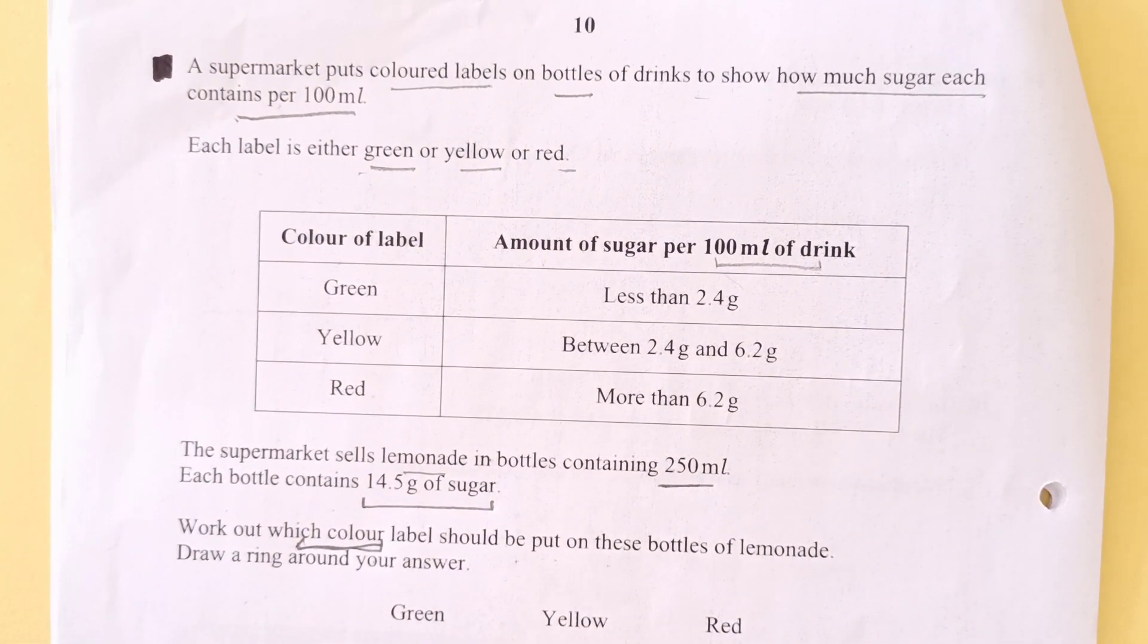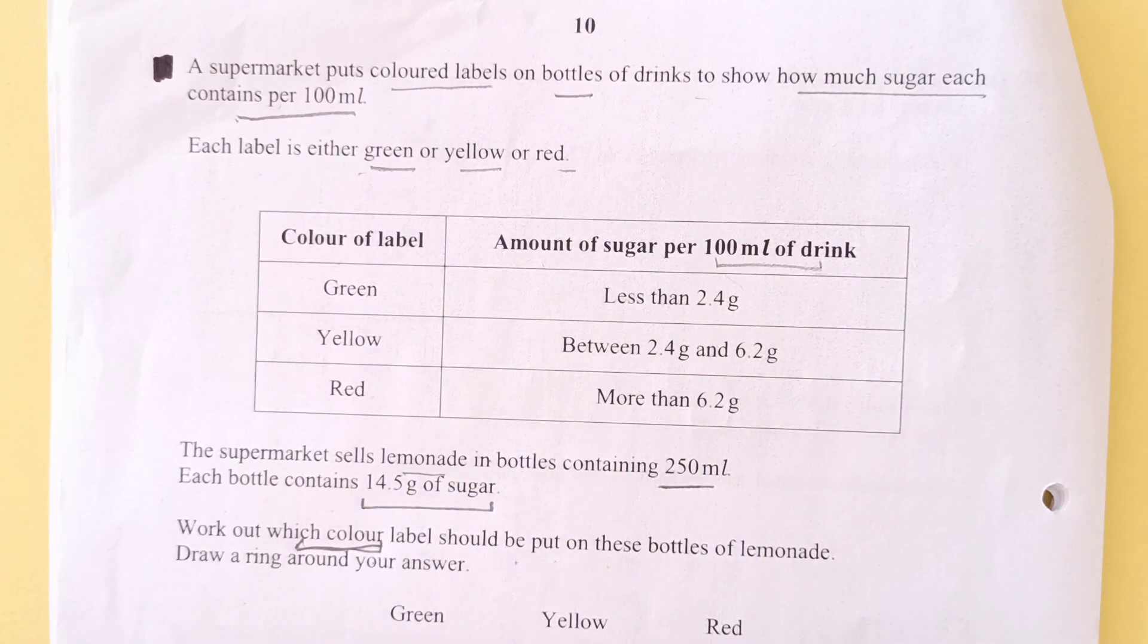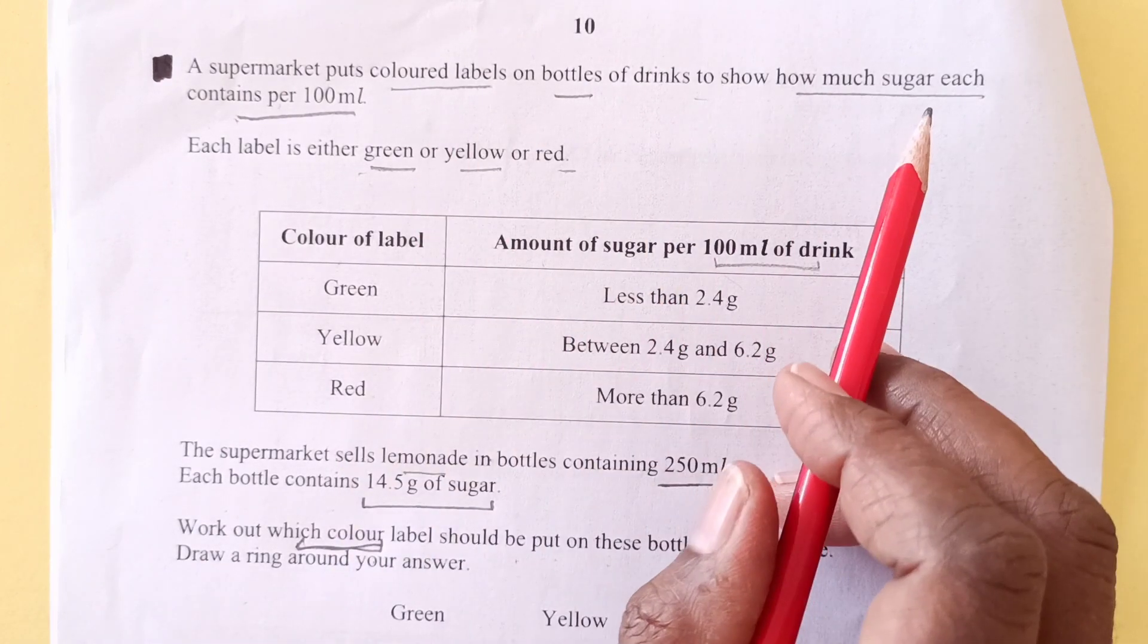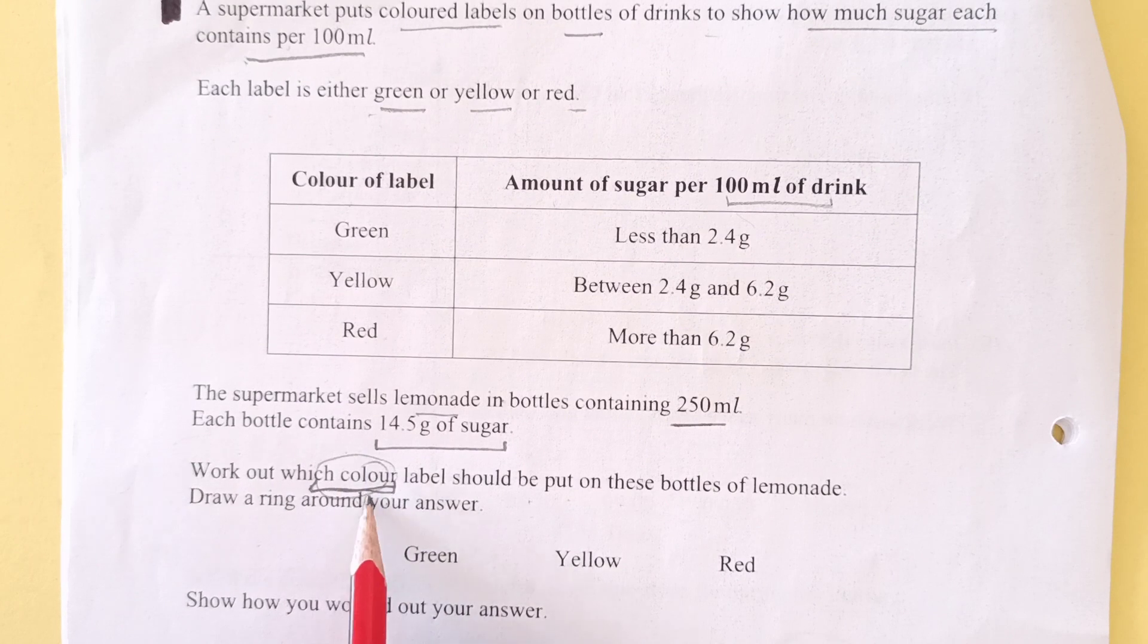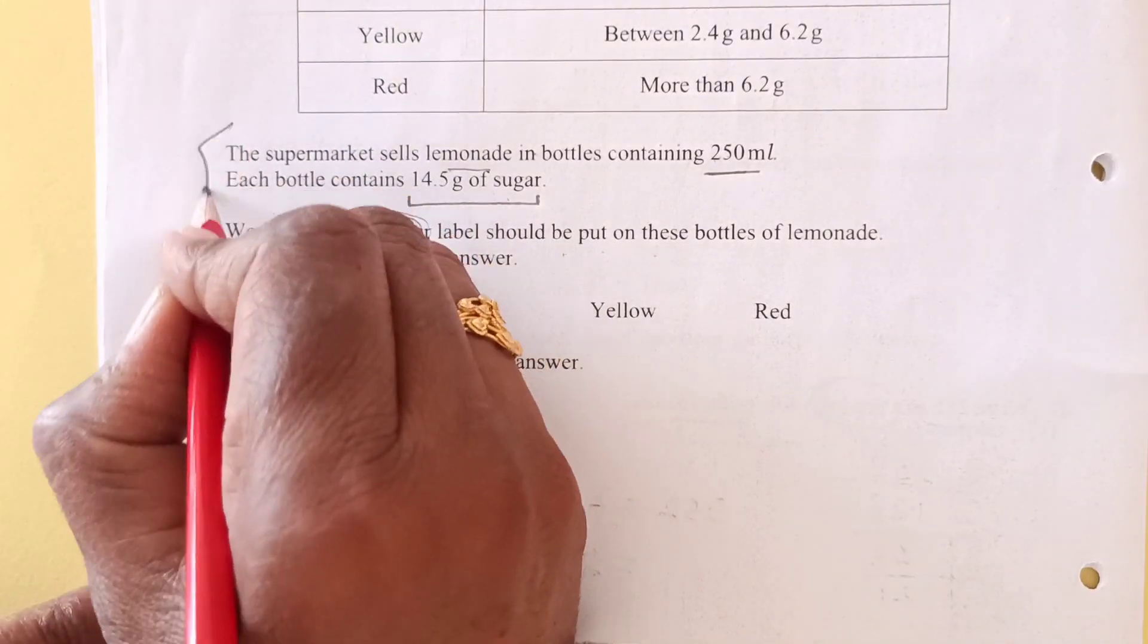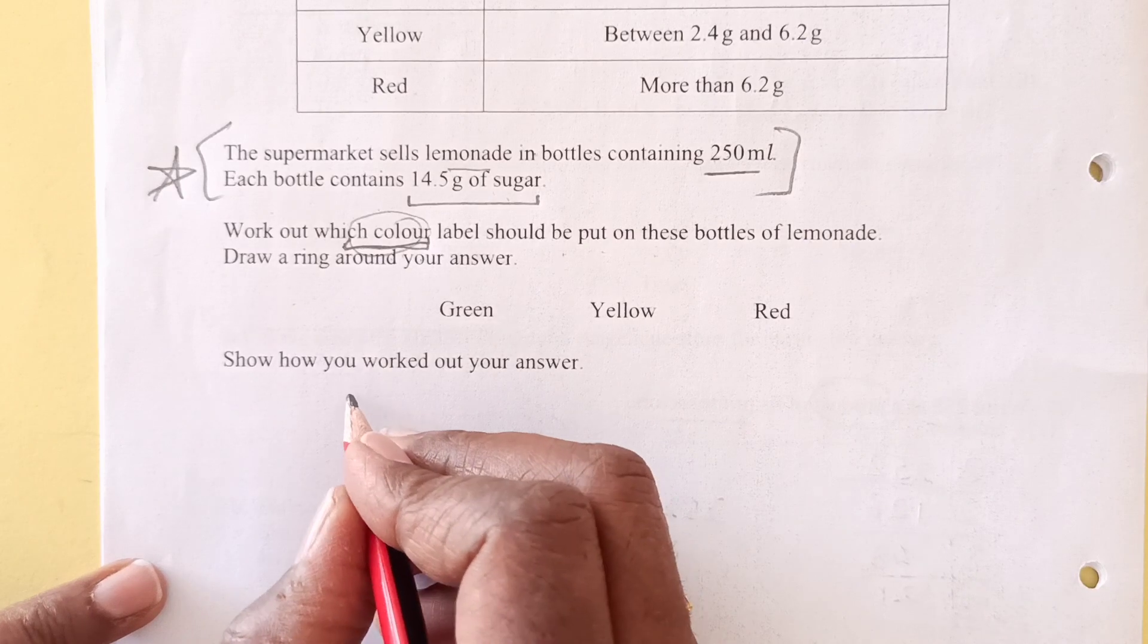Let me know in the comment section, do you find this question tricky or easy? So if I see here, you have a lot of information. To wind that up, first of all you underline the keywords, then you see what do you need. So we need to know the color. How are we going to put color? Based upon the amount of the sugar.